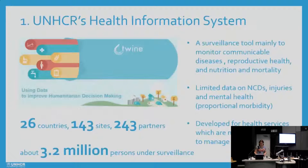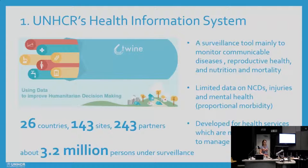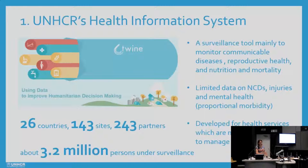The health information system that we have is primarily a surveillance tool, mainly to monitor communicable diseases, reproductive health, nutrition and mortality. It's in place in 143 sites in 26 countries, but it was developed for health services which are not yet well adapted to manage NCDs. It does collect data disaggregated by age and gender, including four age categories — those of interest to NCDs being 18 to 59 and over 60.